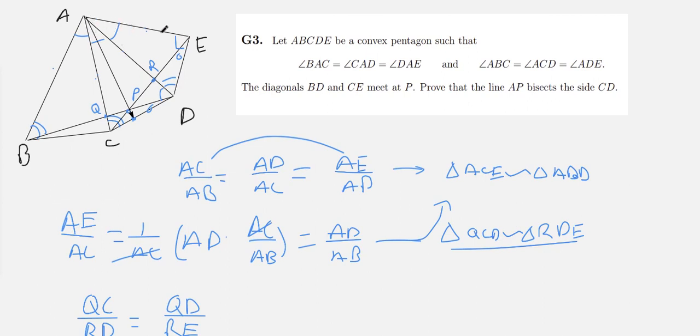Now, we have that angle AEC is equal to angle AER, and angle ADB is equal to angle ADQ. And we already know that these are equal. And we know that, obviously, angle QAD is congruent to angle RAE. So, we know that triangles ARE and triangle AQD are similar.